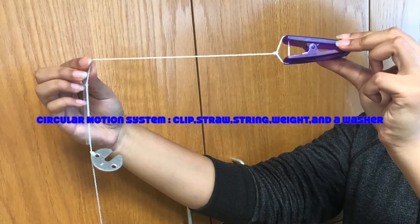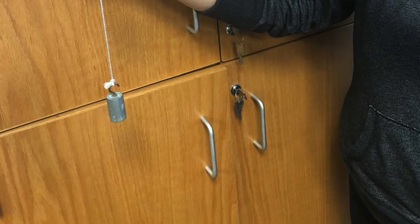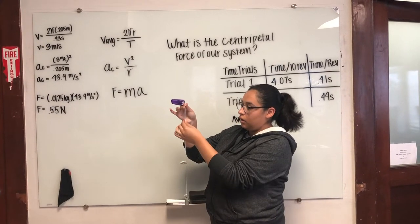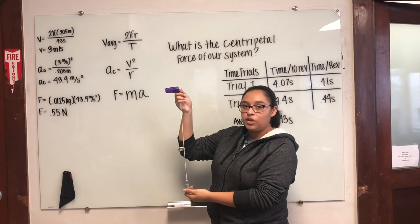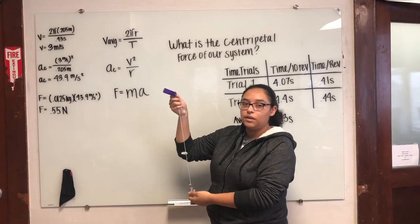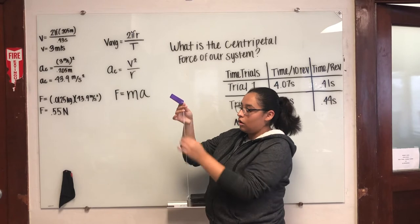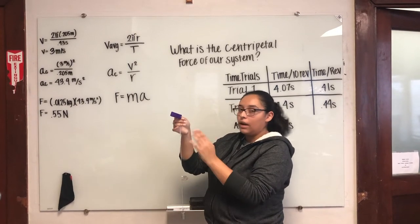For our demonstration here we have a string attached to a weight at the bottom and a clip at the top. It has a washer here as our stopping point and we also have a straw here. So the weight will serve as our direct measurement of centripetal force, and the clip on top will serve as our experimental centripetal force. When we spin this, the straw will move down and the string will move the weight up as it's spinning.